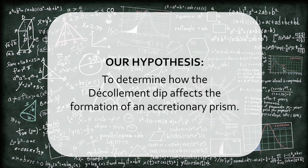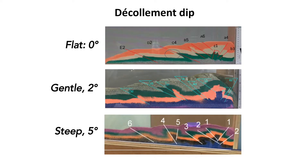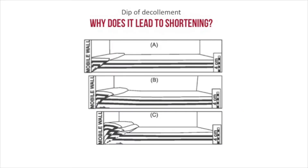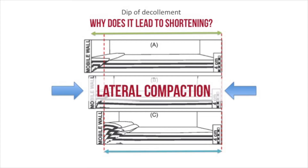This agrees with our initial hypothesis. With increasing décollement dip, there is greater shortening of the wedge, and the sandbox models accommodated a greater amount of shortening by lateral compaction in the form of layer-parallel thickening, rather than propagation of the basal décollement.